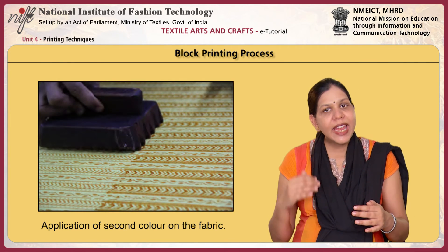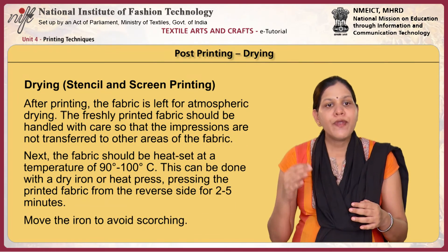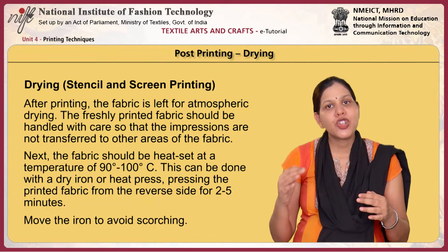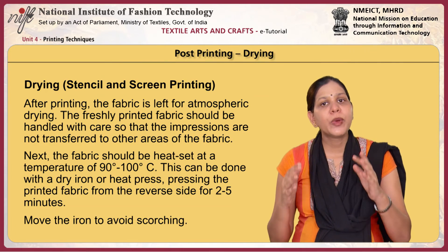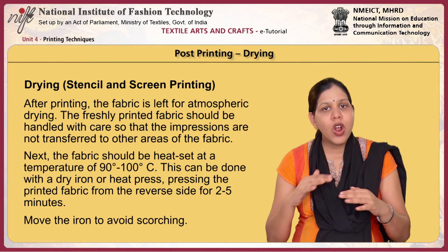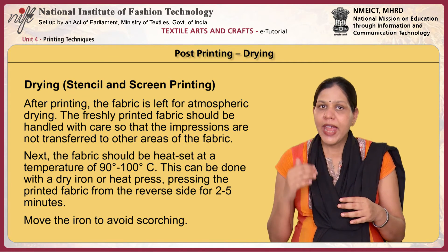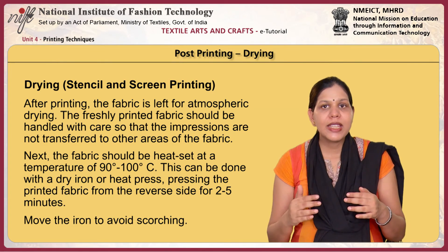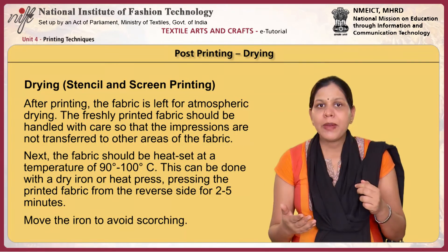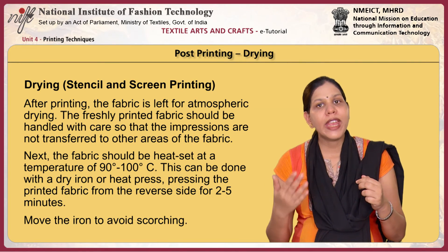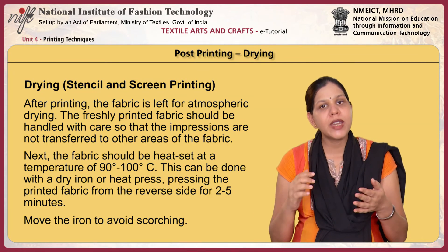Finally, a second application of colour is done. After printing, the fabric is left for atmospheric drying, and the freshly printed fabric should be handled with care so that impressions are not transferred to other areas. Next, the fabric should be heat set at a temperature of 90 to 100 degrees Celsius, using a dry iron or heat press on the reverse side of the printed fabric for 2 to 5 minutes.